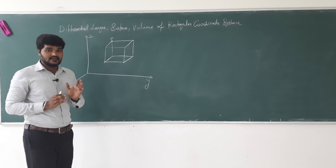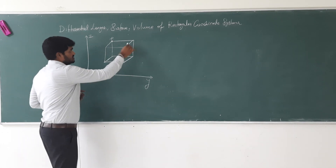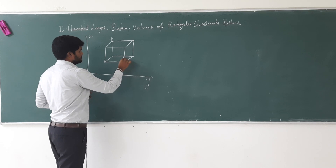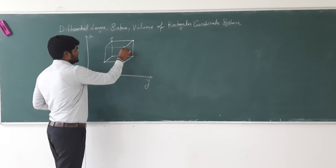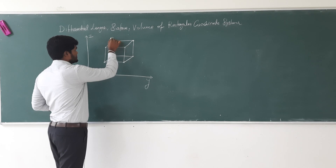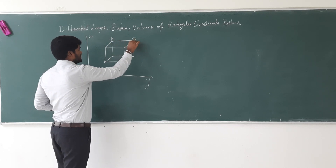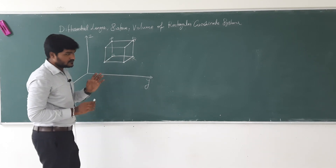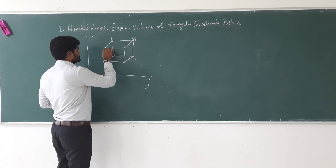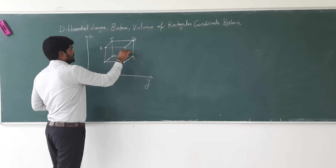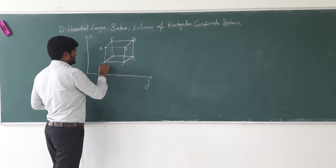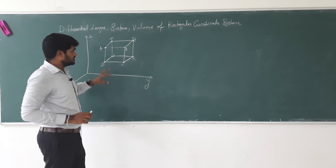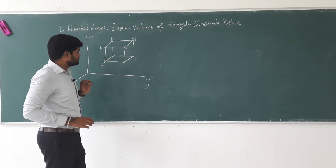This portion has eight edges — these are the edges of this cube, it has eight edges. The starting points are P, Q, R, S — these are the four starting points — and the ending points are considered as A, B, C, and T. We consider this portion in the rectangular coordinate system.